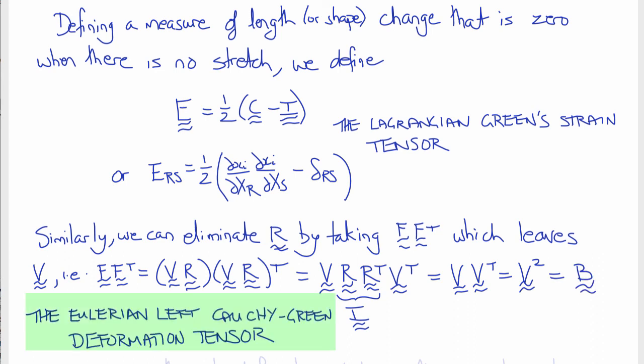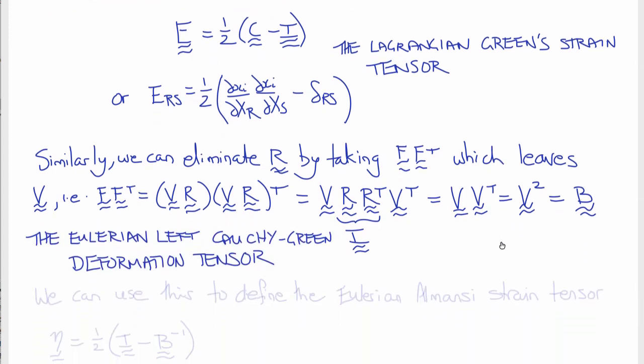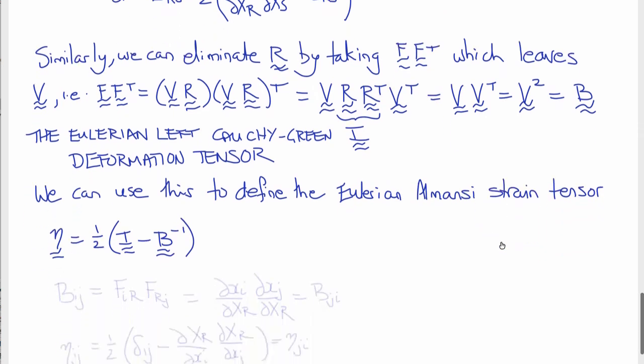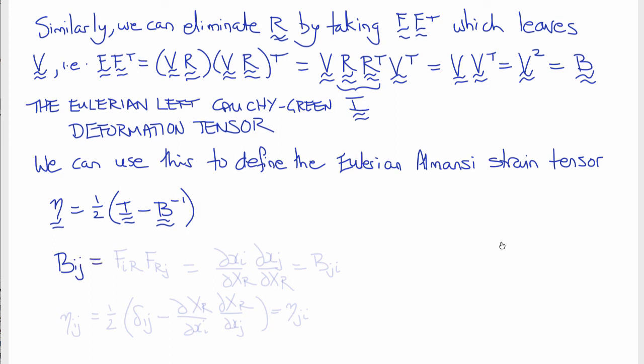In the same way that we use C to define a Lagrangian strain tensor, we can use B to define an Eulerian strain tensor, which is known as the Almenzi strain tensor, which is sometimes denoted by eta, and eta is one-half of (I minus B inverse). If we look at the components of B, there would be B_ij equals F_ir F_rj. So that would be FF transpose. Notice this time, it's the components that refer to the undeformed reference coordinates that are summed, leaving us del xi del Xr del xj del Xr.